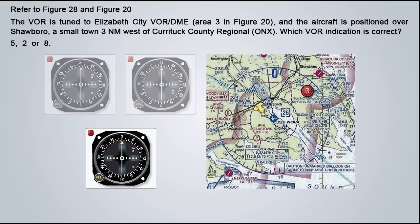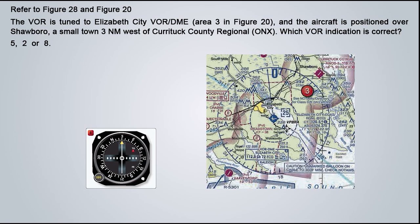Let's start with VOR number 8. First, we look at the flag, which points straight up. And because the needle is centered, the number we're looking for to fly directly to the station would be straight up from the middle of the instrument — in this case, 030. This means that to head directly to Elizabeth City VOR, we would need to fly a heading of 030, a north-north-easterly heading. Drawing that heading on the chart, it's quite evident that Showboro is nowhere close to that line, which means VOR number 8 cannot be our correct VOR.